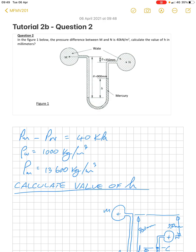In fact M is 40 kilopascals higher than N and we're asked to calculate the value of H which is the deflection in the mercury in millimeters.